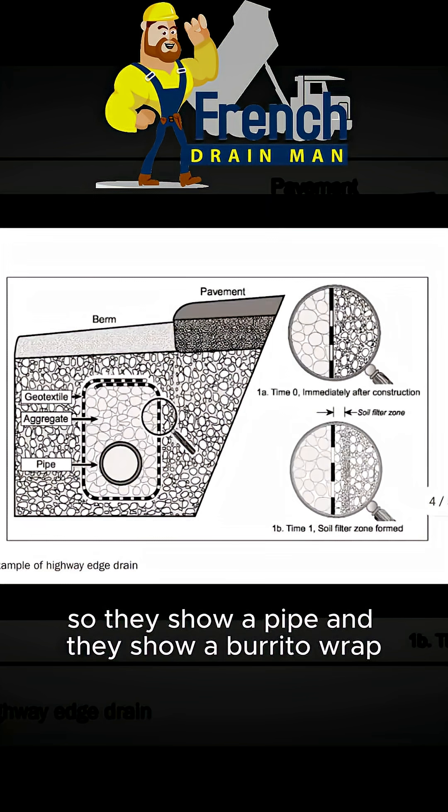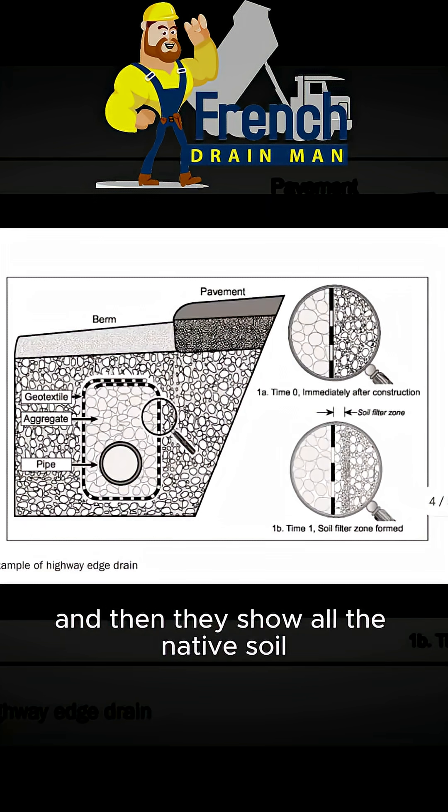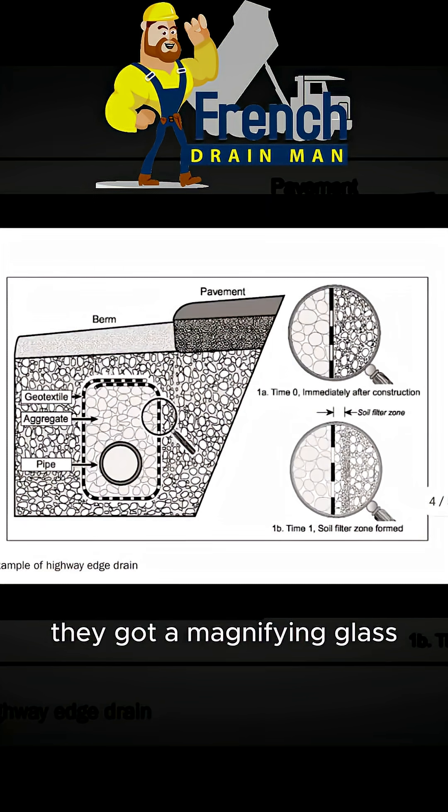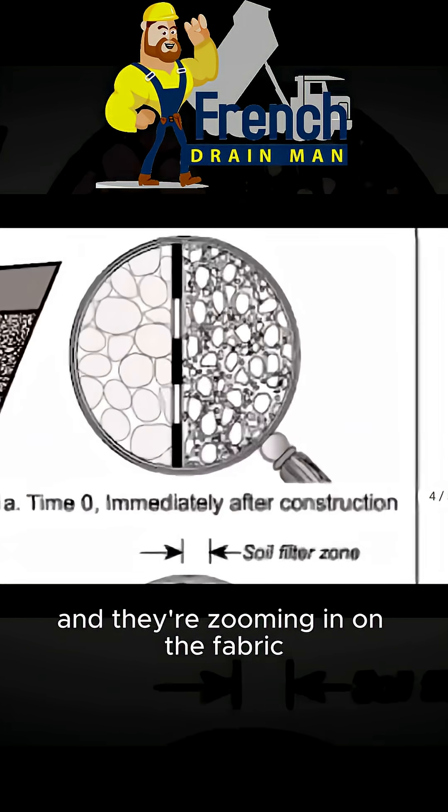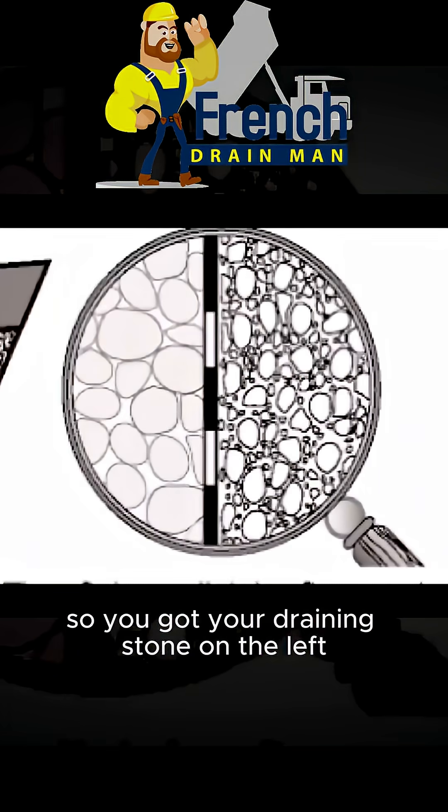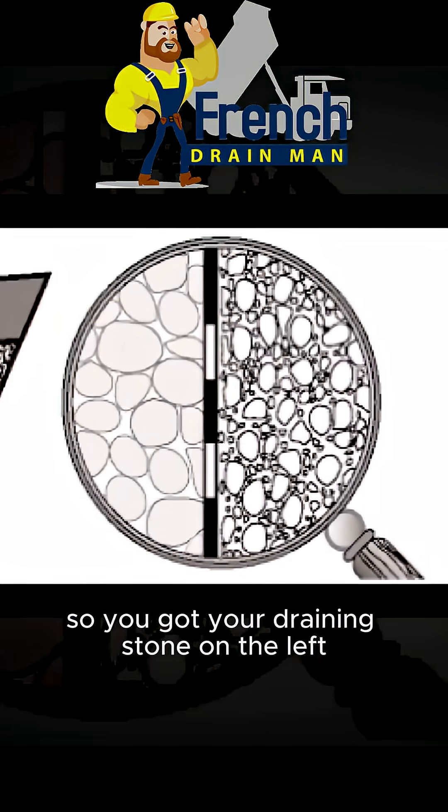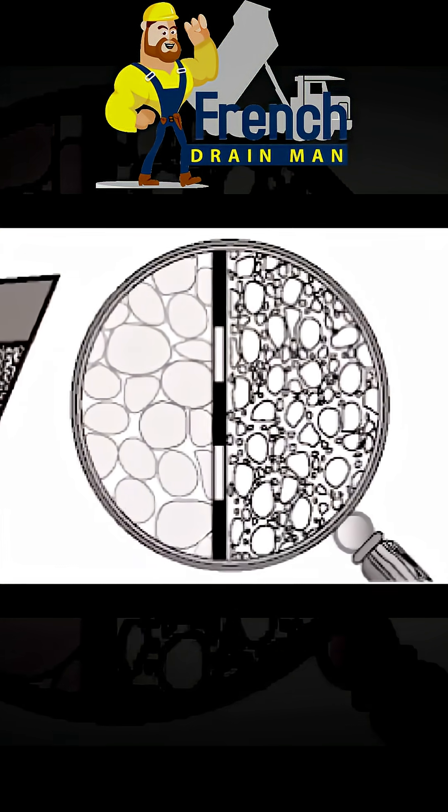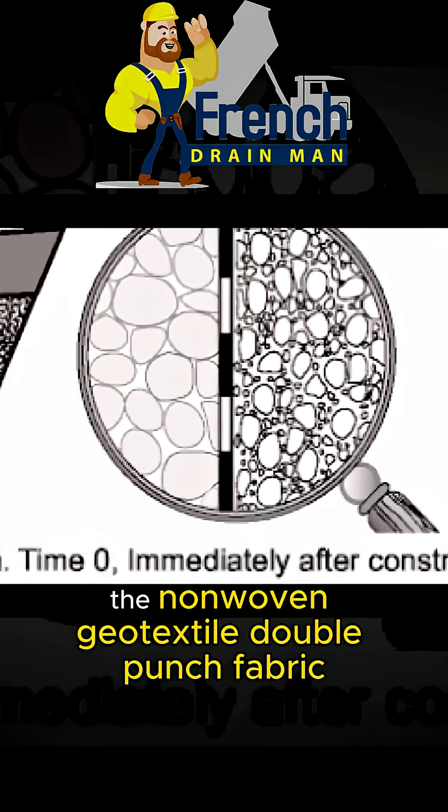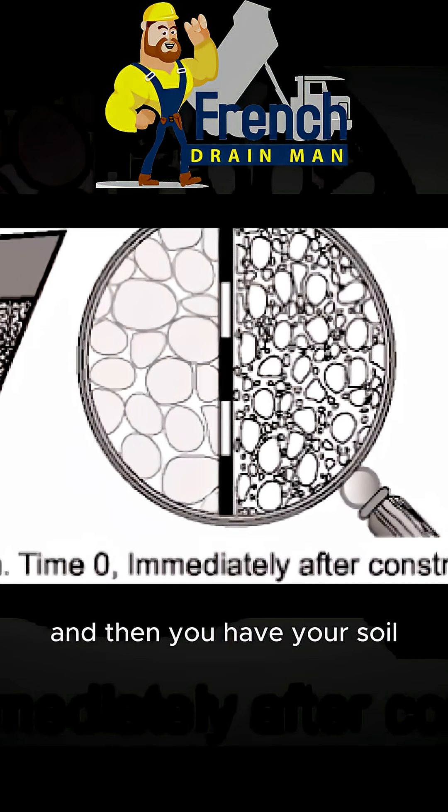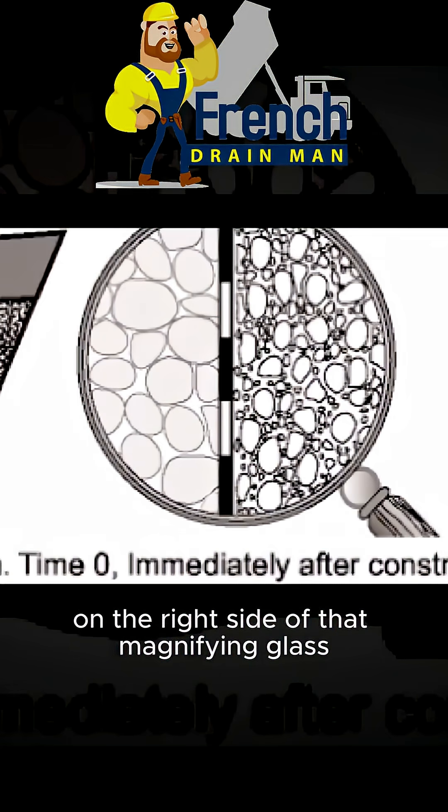So they show a pipe and they show a burrito wrap and then they show all the native soil. They got a magnifying glass and they're zooming in on the fabric. You got your drainage stone on the left, in the middle of that magnifying glass the non-woven geotextile double punch fabric, and then your soil on the right side of that magnifying glass.